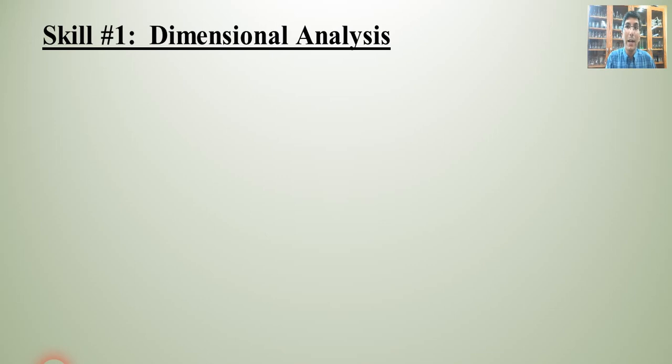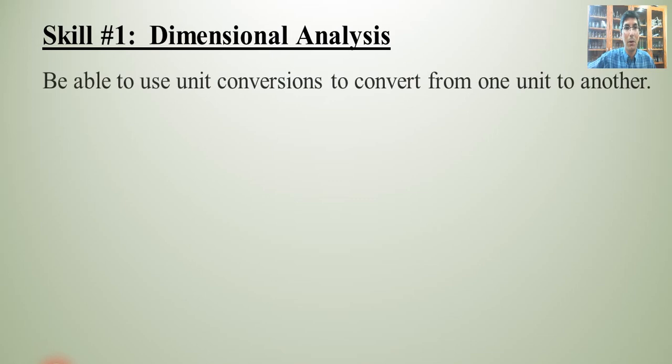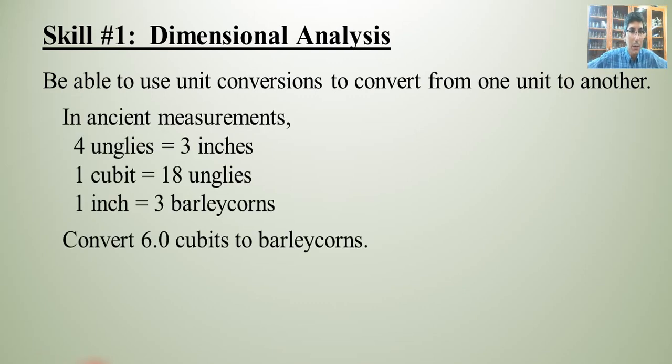And before I go much further, I do expect that you remember some things from your first year chemistry class. So when I say remember, one of the very first things we did in chemistry was convert from one unit to another. So you might remember being able to do something like this. So let's say we have some ancient measurements, and I used measurements that you're probably not familiar with on purpose. Four unglies equal three inches, one cubit equals 18 unglies, and one inch equals three barley corns. So using that information, convert 6.0 cubits to barley corns.